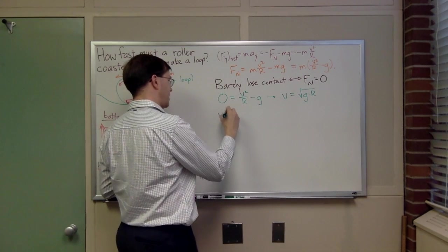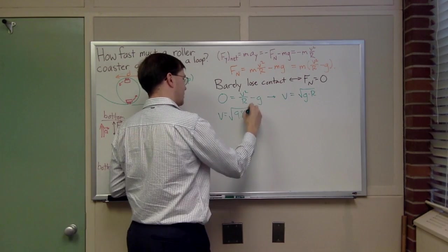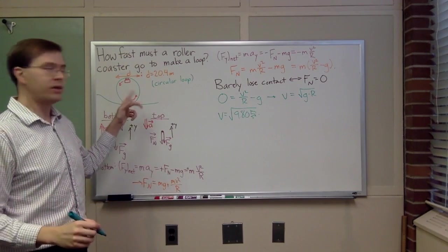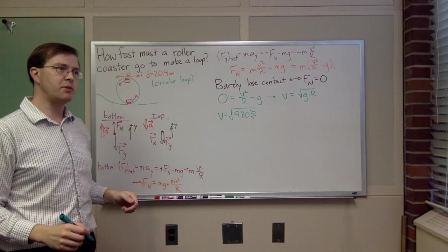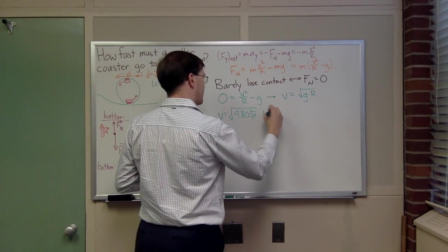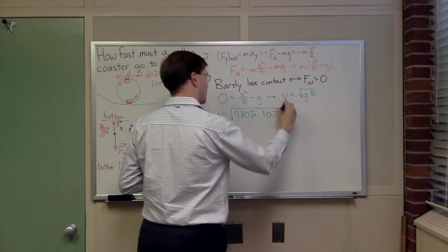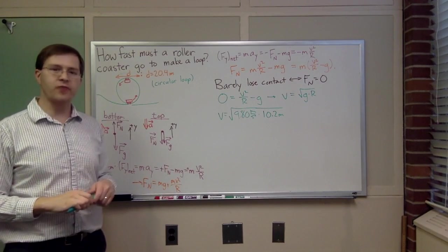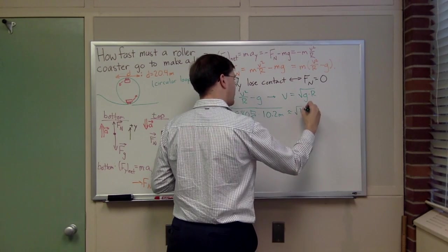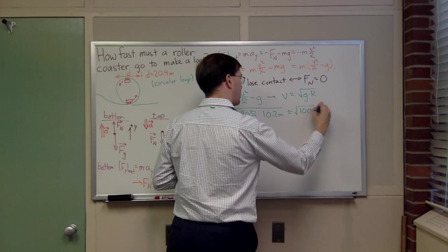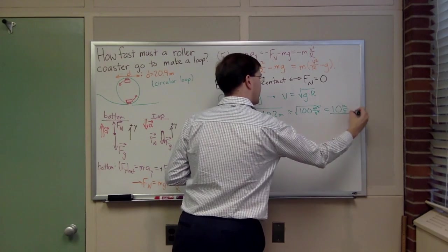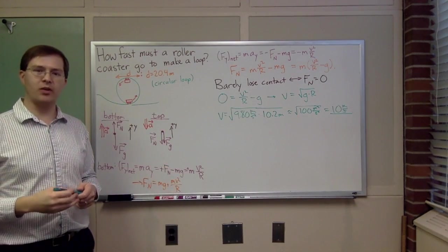For us, that means v equals the square root of 9.8 meters per second squared times, what's my radius? Well, I specified in the picture the diameter of this loop is 20.4 meters, which might be big. But it's 20.4 meters, so my radius is 10.2 meters. And by clever construction, this happens to come out to be very close to the square root of 100, about 10 times 10, meters squared per second squared, which is just 10 meters per second. So that's the speed I would need to be going to make it around this roller coaster loop.